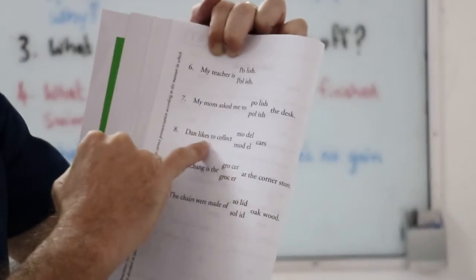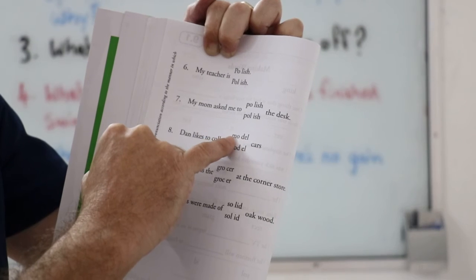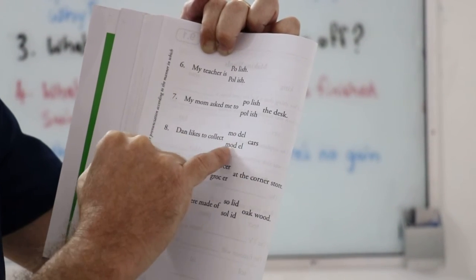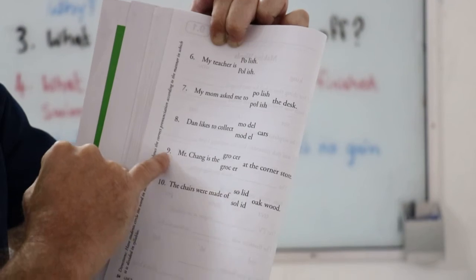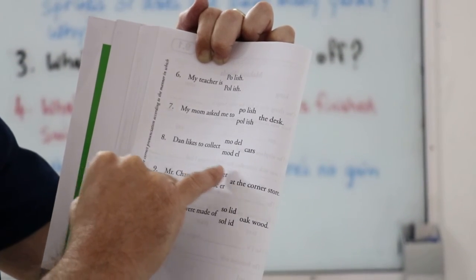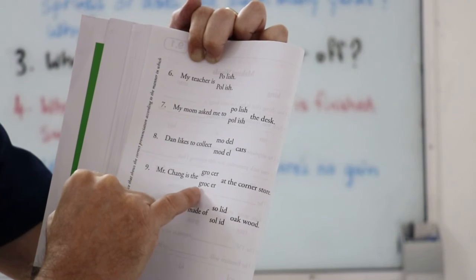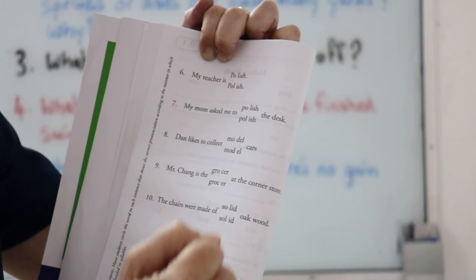Number eight, Dan likes to collect model cars or Dan likes to collect model cars. Number nine, Mr. Chang is the grosser at the corner or Mr. Chang is the grosser at the corner.